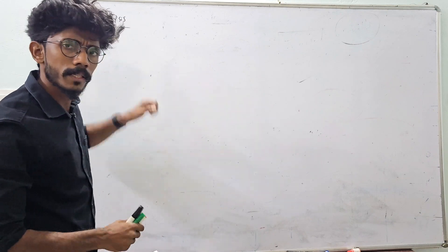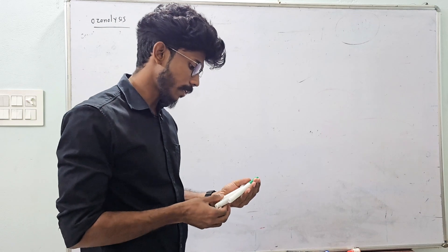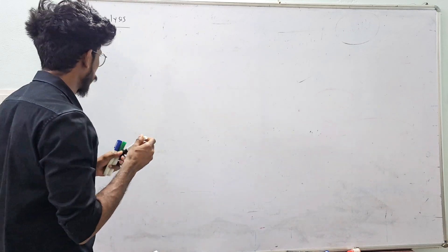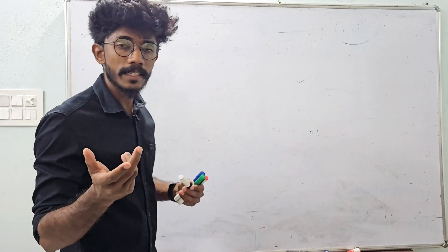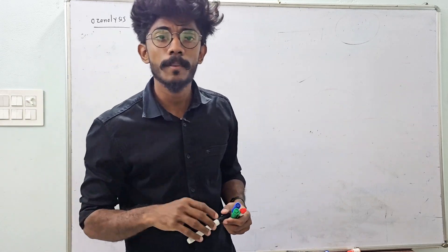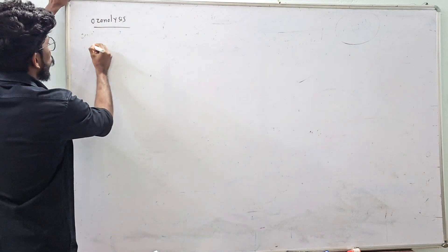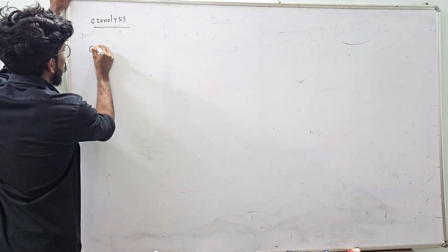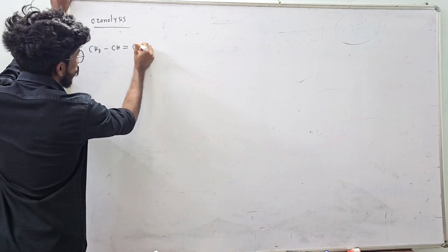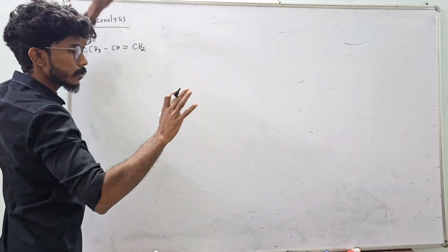We are going to talk about ozonolysis. Ozonolysis involves alkenes — double bond compounds. In this example, we are going to talk about CH3CH double bond CH2. We are going to talk about ozonolysis.